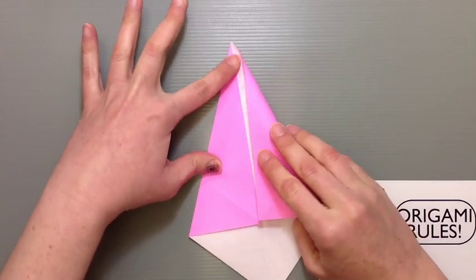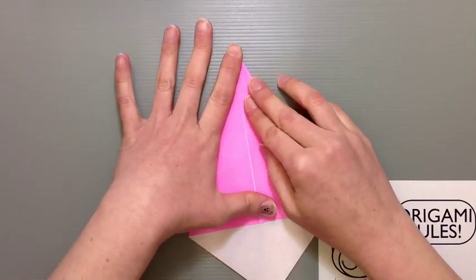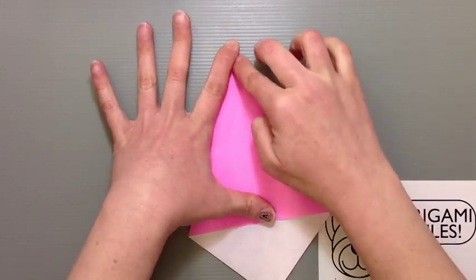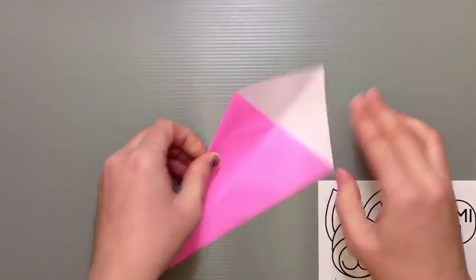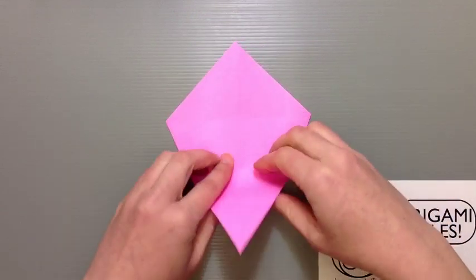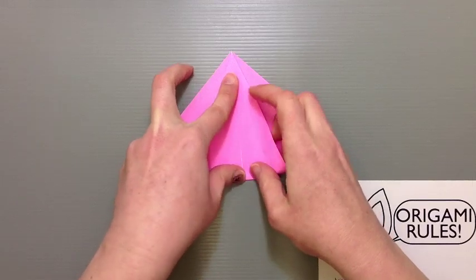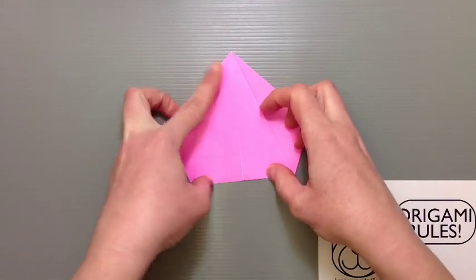And then we'll do the other side too. Once you've got both of those folded in to look like a kite we're going to flip it over. And I'm going to reverse that crease by just folding everything up so that I bring the tip all the way up to the top. Fold it in half here.